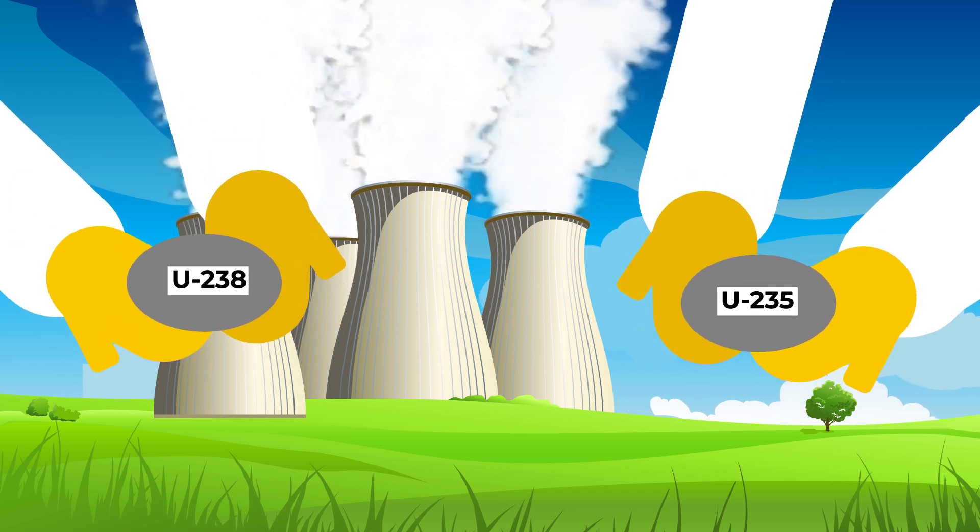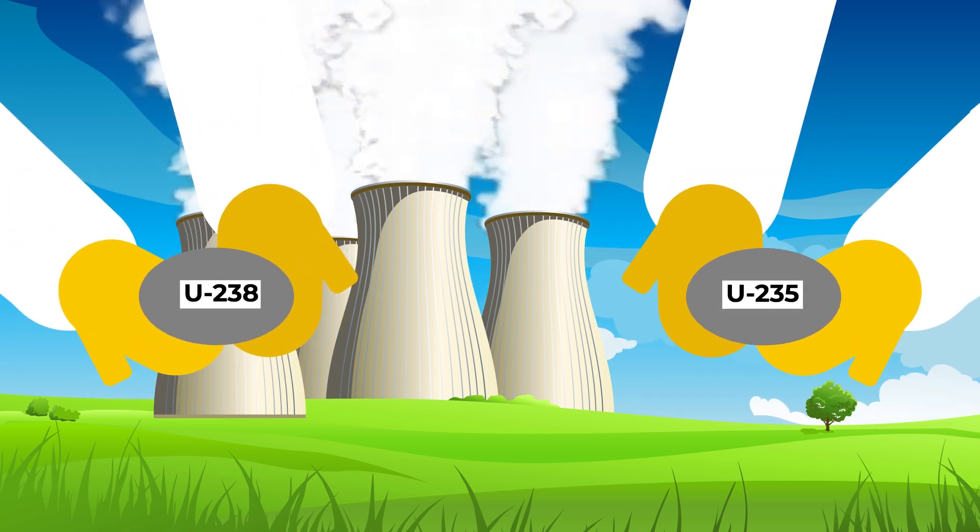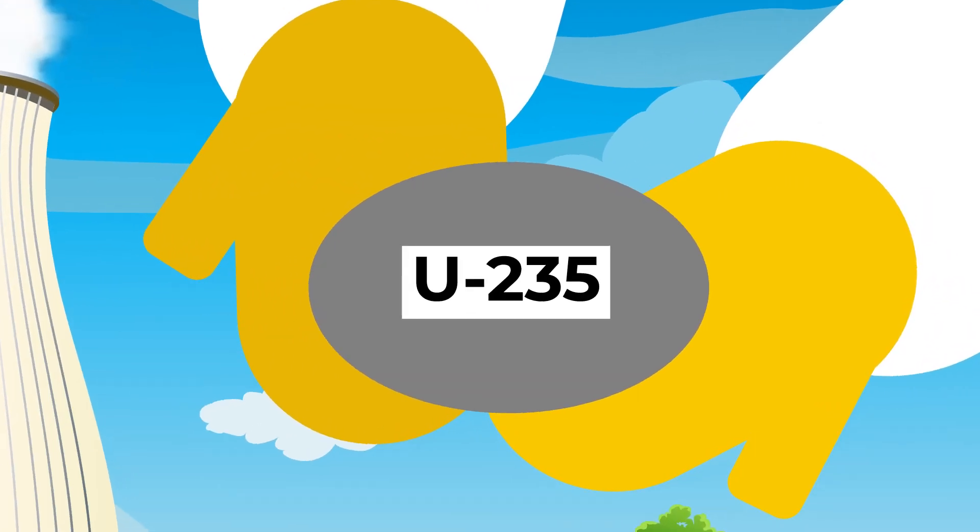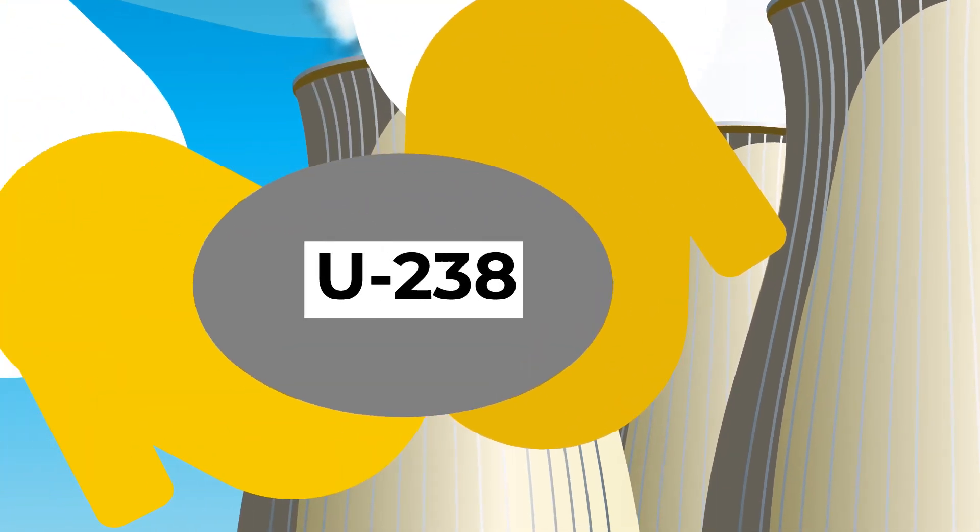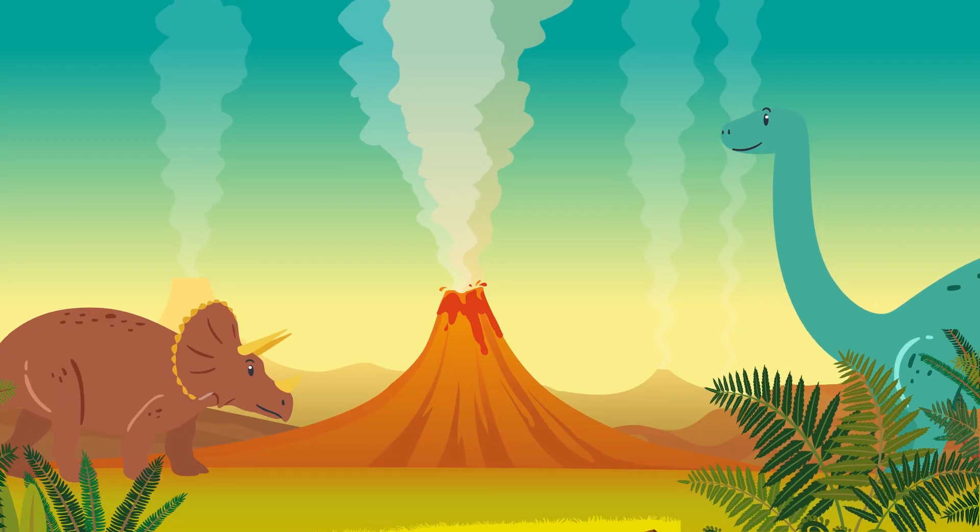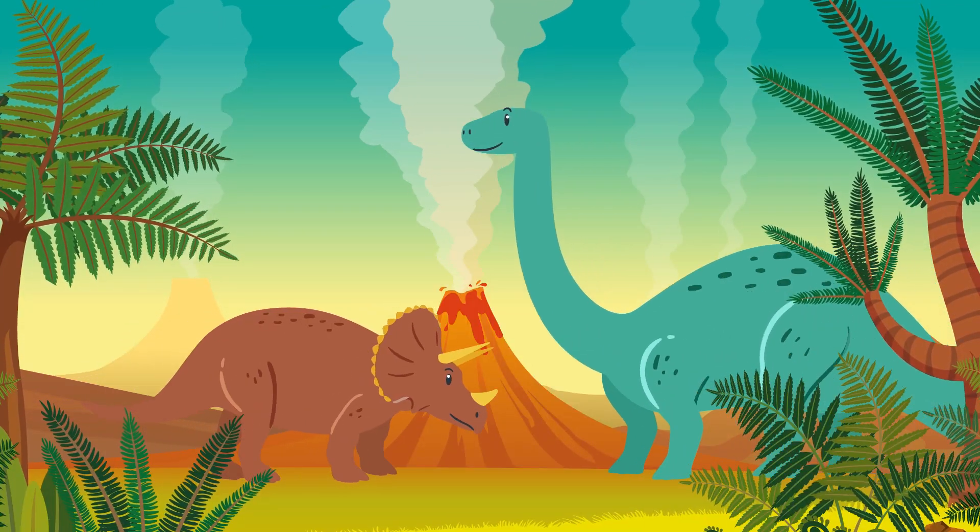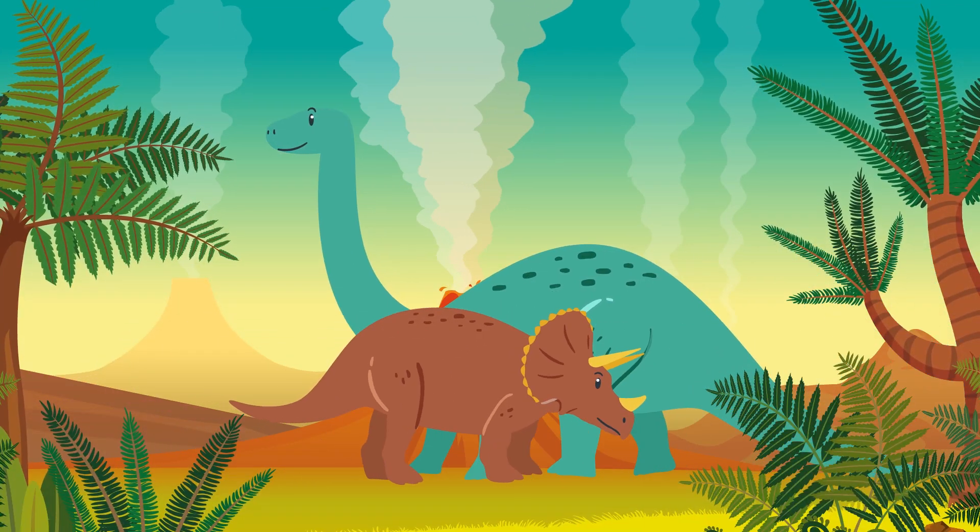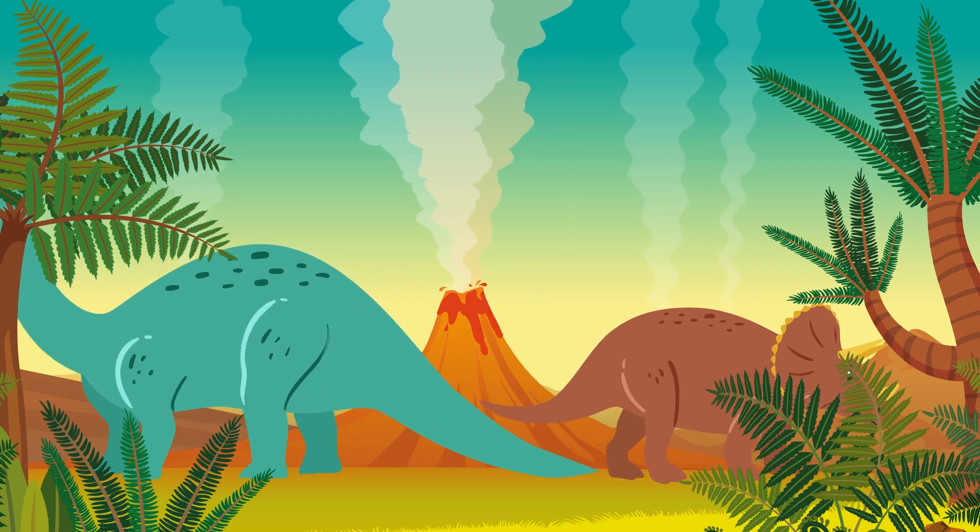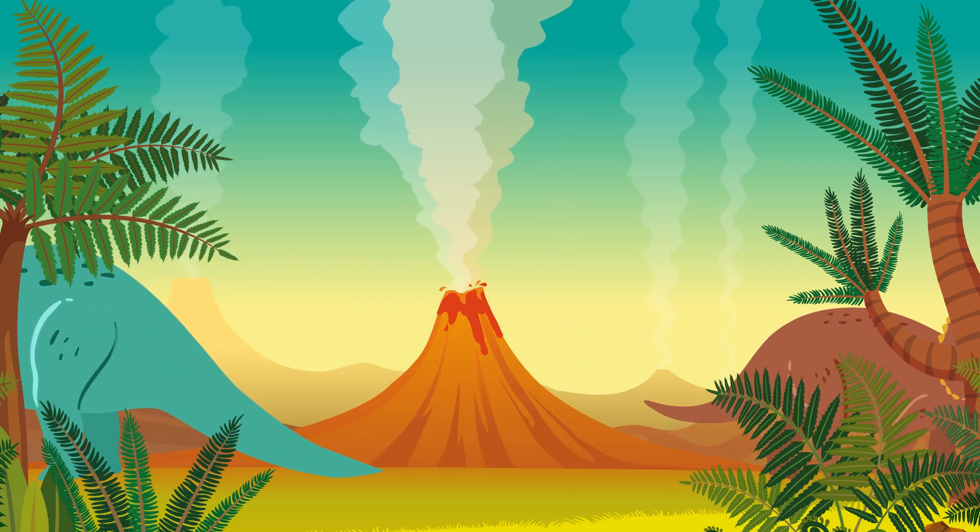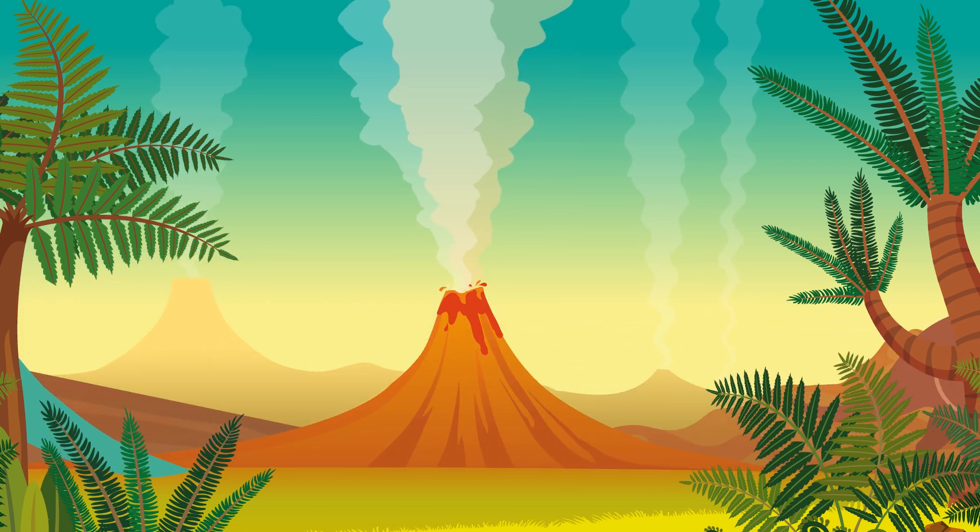And since the isotopes decay at different rates, once upon a time the ratio would have been different, and it could have been optimal. Two billion years ago, the ratio of U-235 to U-238 was about three percent, which incidentally is perfect for a light, water-moderated chain reaction. So the first hint was that the reaction happened a very, very long time ago.